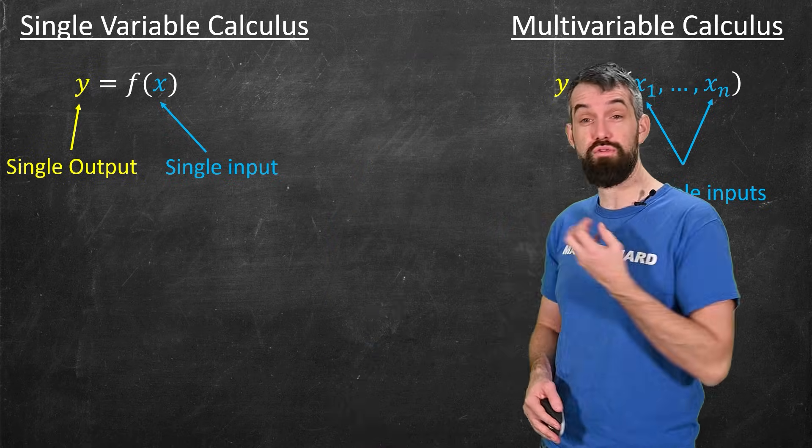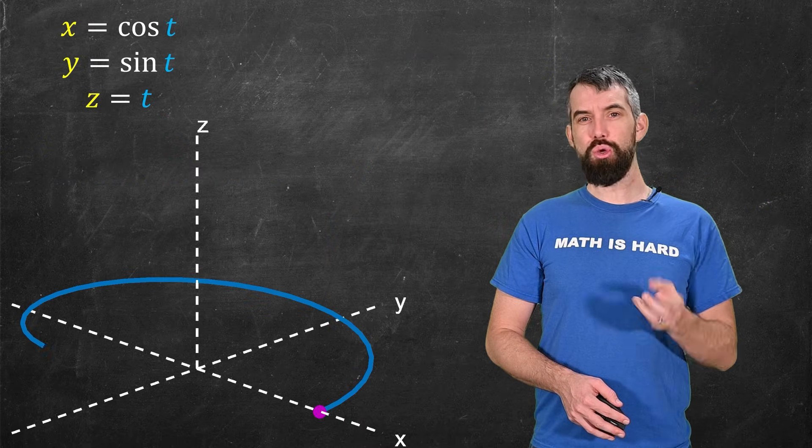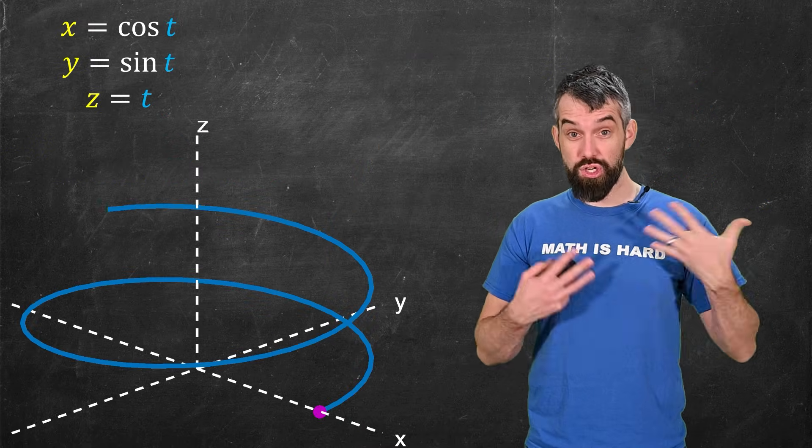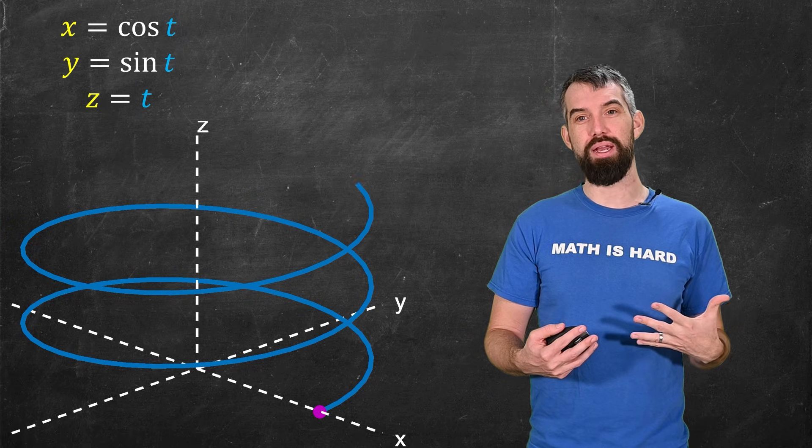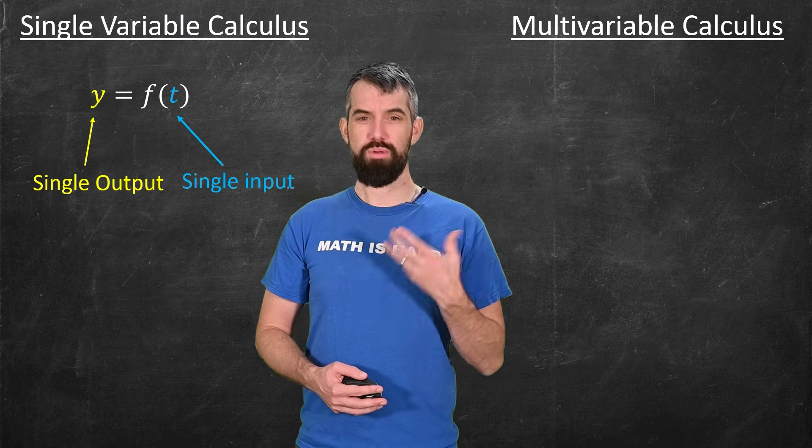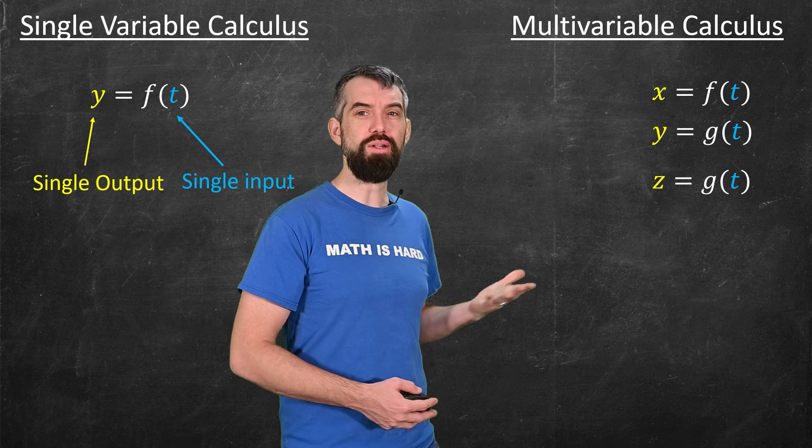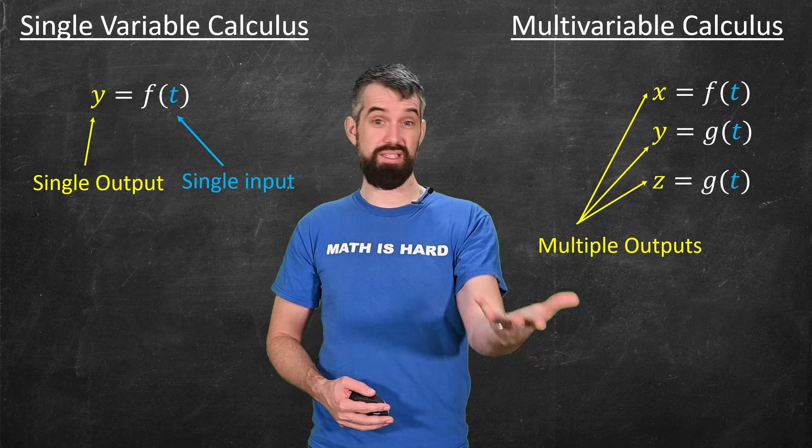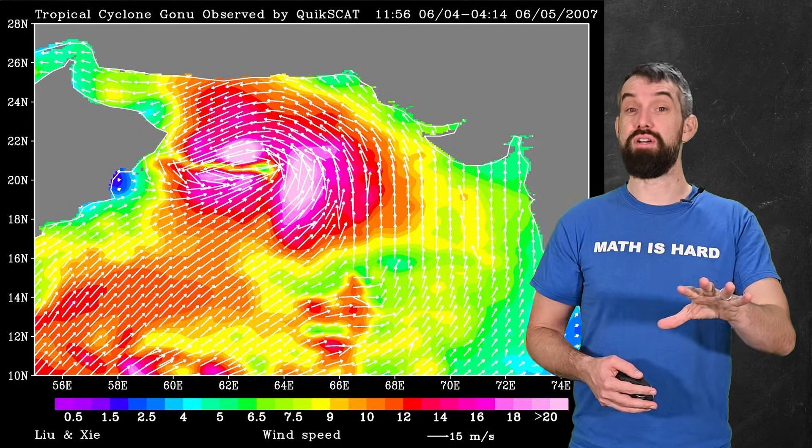But you can also look at curves like this. In this, you have one input, T, which I've interpreted as a time input. And as T changes, X, Y, and Z change. What's going on here is now we have multiple different outputs and a single input. And you can combine those.